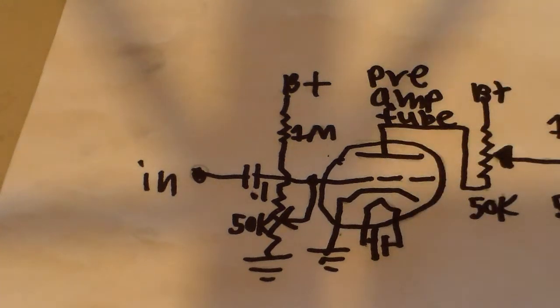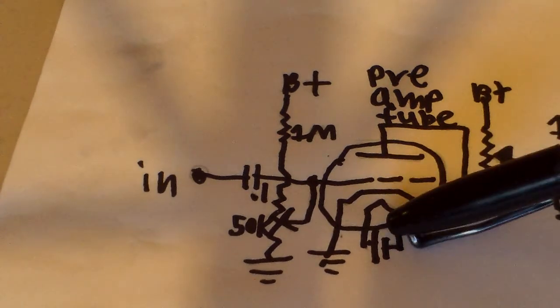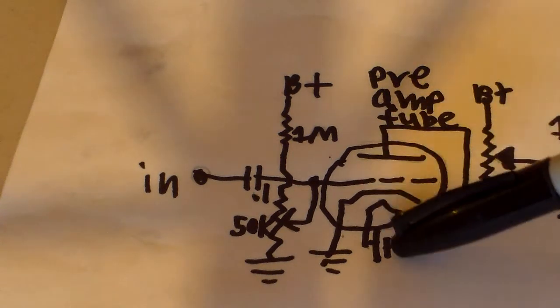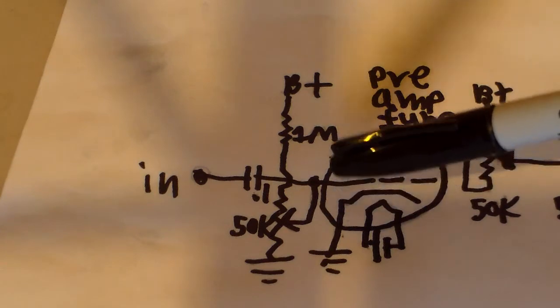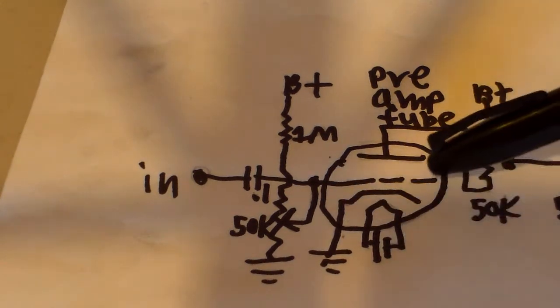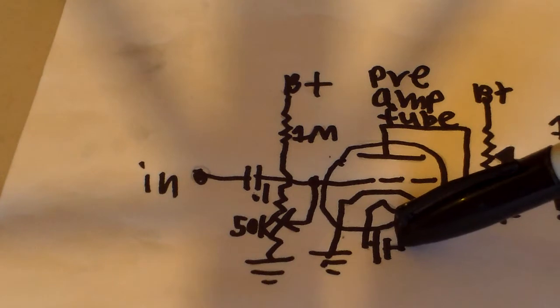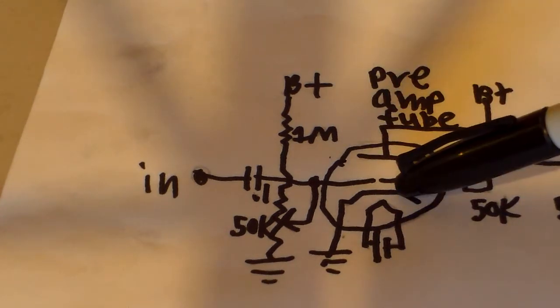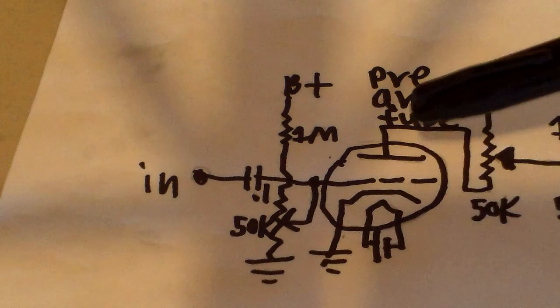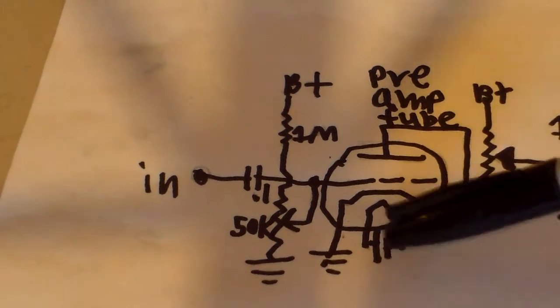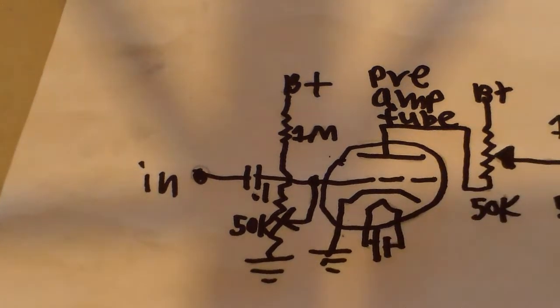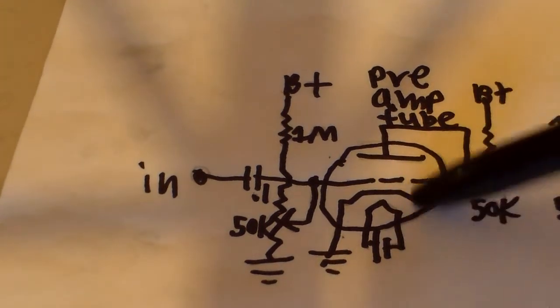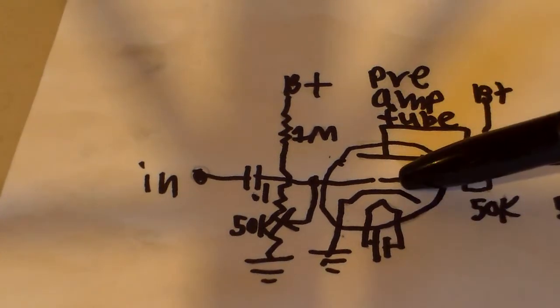Now in most tube diagrams, or at least some of them, this filament won't be shown unless one of the grids is connected to the filament, or unless the cathode is connected to the filament, or if the filament is just acting as the cathode itself. And other than those situations you usually won't see this filament. The diagram will just assume that the tube's already warmed up and ready to function.